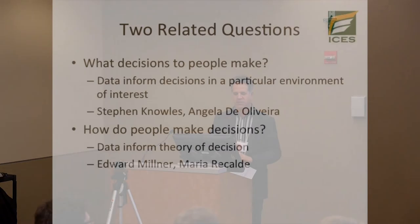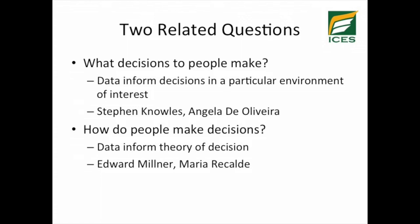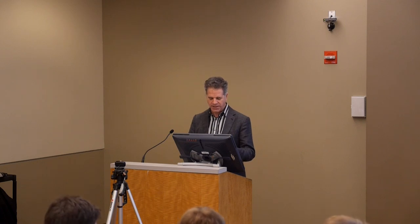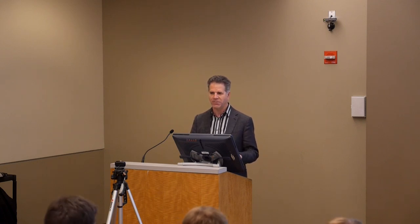So we have these two questions: what decisions do people make, and how do people make decisions? In this session, we'll see examples of both. Stephen Knowles and Angela de Oliveira will speak on what decisions people make. Edward Milner and Maria Ricalde will speak on how people make decisions. Our first speaker is Maria Ricalde from the University of Pittsburgh, speaking on intuitive generosity and error-prone inference from decision time.